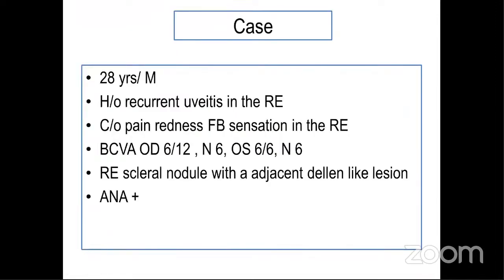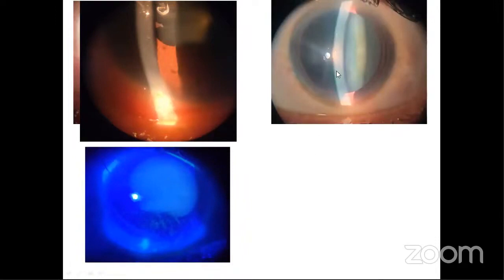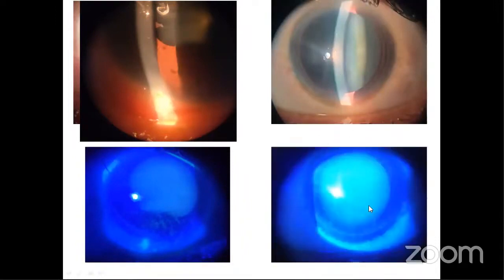Coming to my next case: a 28-year-old male patient presented with a history of recurrent episcleritis in the right eye. He was complaining of pain, redness, and foreign body sensation. On examination, he had a tender sterile nodule just adjacent to the inferior limbus, and was found to be anti-nuclear antibody positive. This is a right eye color photograph showing a paralimbal tender nodule. On fluorescein staining of the right eye, and for the left eye — the patient was completely asymptomatic — the fluorescein staining pattern showed significant irregularities. So I suspected dry eye and sent the patient to the dry eye clinic.